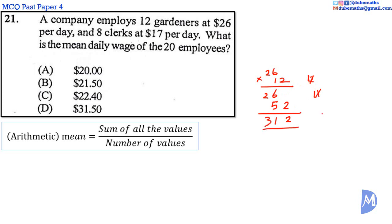And 17 multiplied by 8. 7 eights are 56. 1 times 8 is 8 plus 5 is 13.